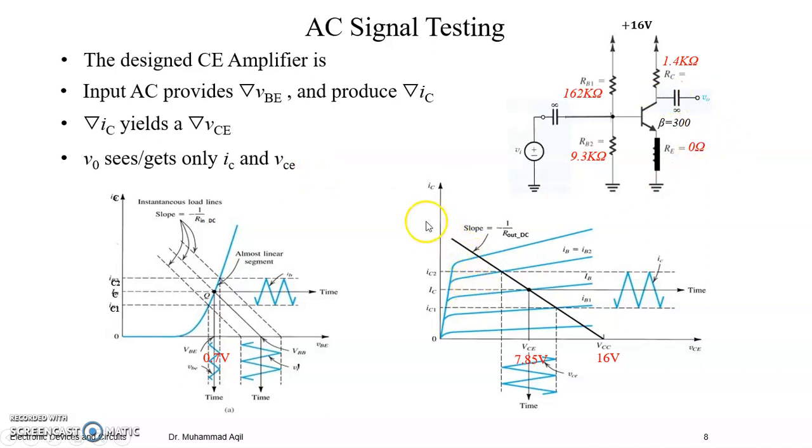So let's do simulation of this circuit to validate the DC Q-points, this one looks for the early effect, and the AC swing and the maximum swing.